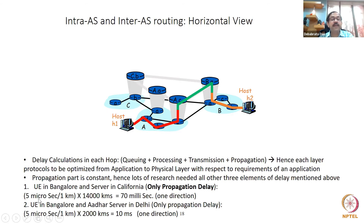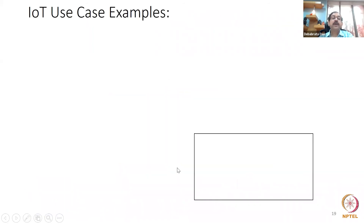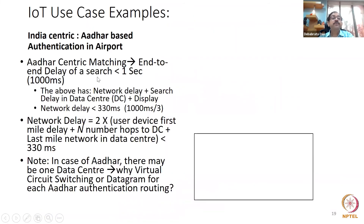For example, from Bangalore to San Francisco: 14,000 km — only propagation delay is 70 milliseconds in the fiber (one direction). From Bangalore to Delhi: 2000 km — propagation only about 10 milliseconds one way. But this is only propagation — you must add queuing delay at each router (every 100 km or so), plus transmission delay, for the full picture.